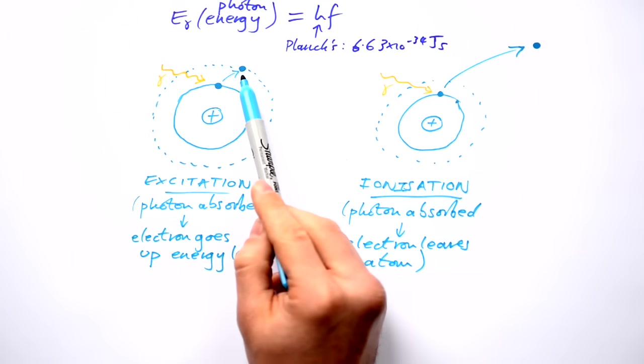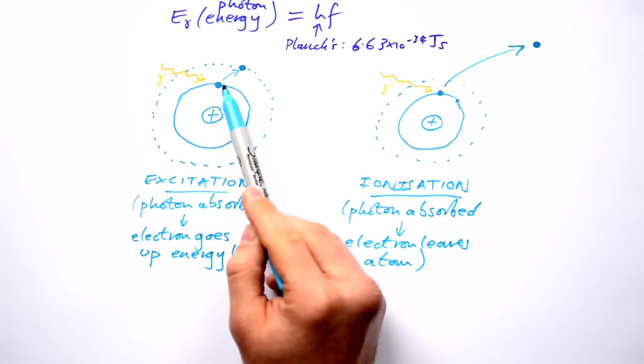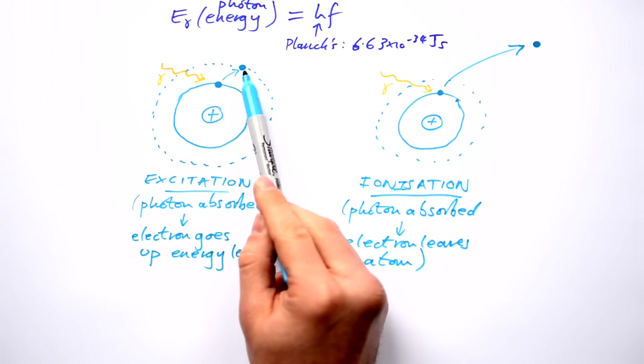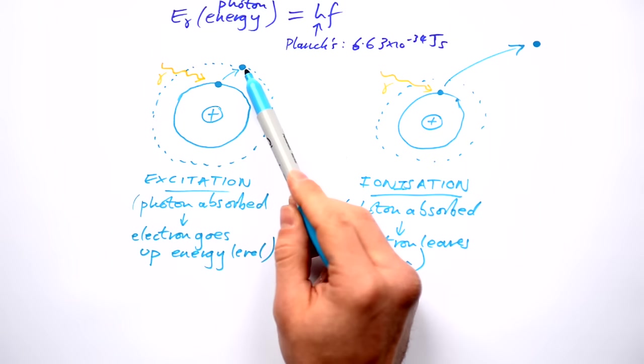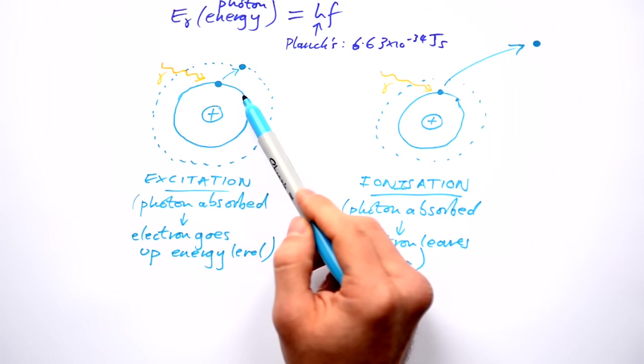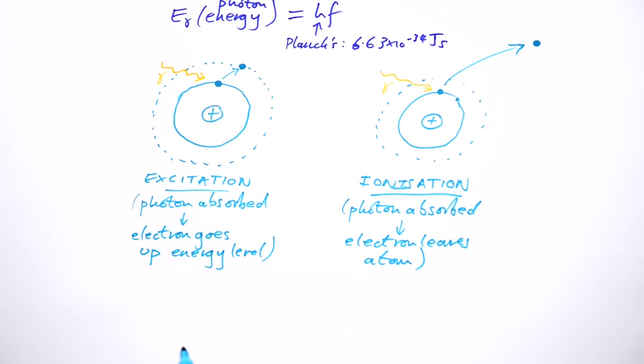Now this electron here doesn't like being in the energy level above where it's supposed to be usually. So after it's absorbed the energy and gone up, it will come straight back down. When this electron does go back to its normal energy level, energy is released.